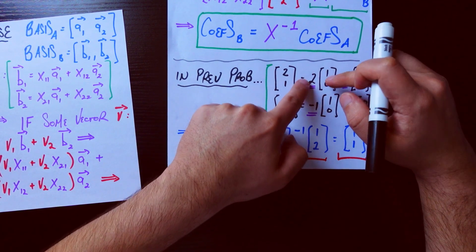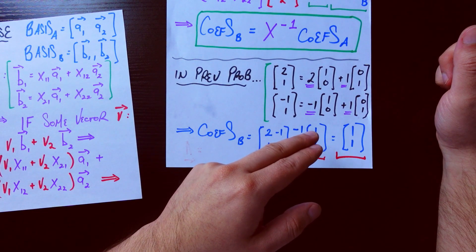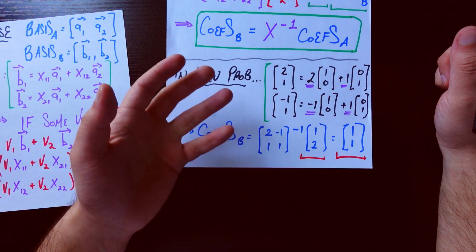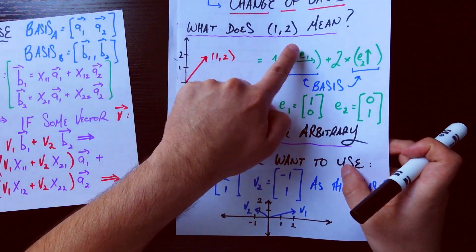So the coefficients of B are given by this matrix inverse, which I just grabbed these coefficients, times the representation of this vector in terms of the original basis, which was e1 and e2, which was just [1,2].